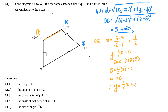Question 4.1.3 asks us to determine the coordinates of point B. Since AB is perpendicular to the x-axis, AB runs parallel to the y-axis, meaning the x-value of B is the same as A: negative 2. The length DC was 5 units, and since AB equals DC, I subtract 5 from the y-value of A (which is 3), giving negative 2. So B is (negative 2, negative 2).